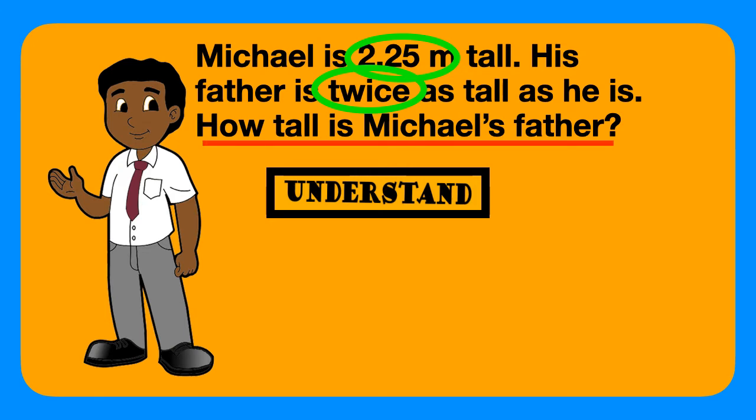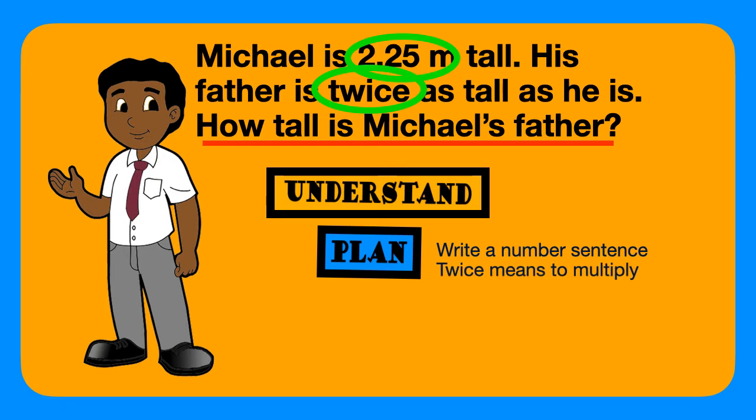Now, it's time to plan. When we plan, we must choose a strategy that makes sense. In planning, the strategy that we're going to use is to write a number sentence. The key word here is the word twice. Twice means that we must multiply. So now, we can solve our problem.